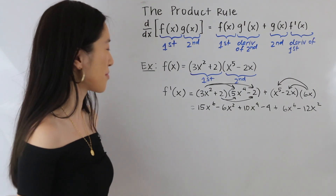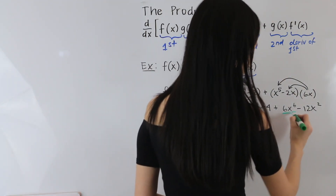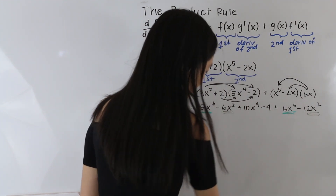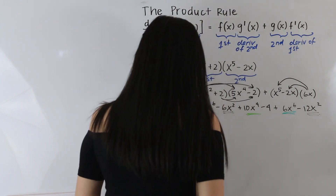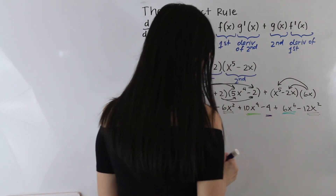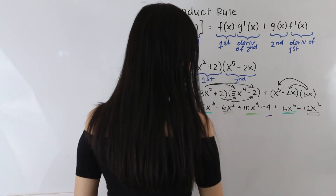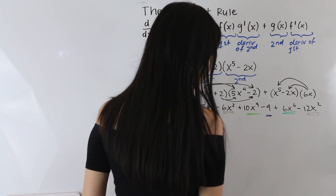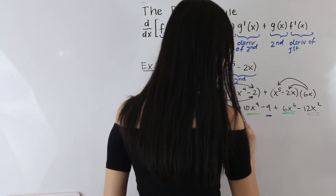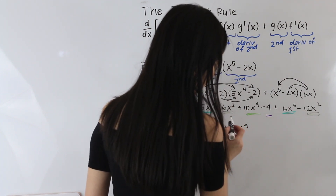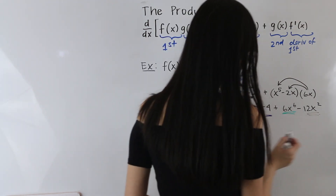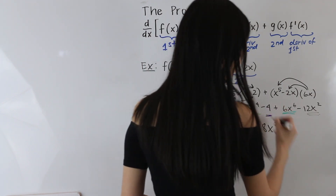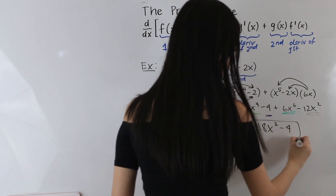The next step is to combine like terms. We have an x to the sixth term here and an x to the sixth term here. We have an x squared term here and an x squared term here. We have an x to the fourth term here and a minus 4. Combining like terms: 15x to the sixth plus 6x to the sixth gives us 21x to the sixth. Then we have our 10x to the fourth, and our minus 6x squared minus 12x squared gives us minus 18x squared, and we have our minus 4. And so that is our derivative.